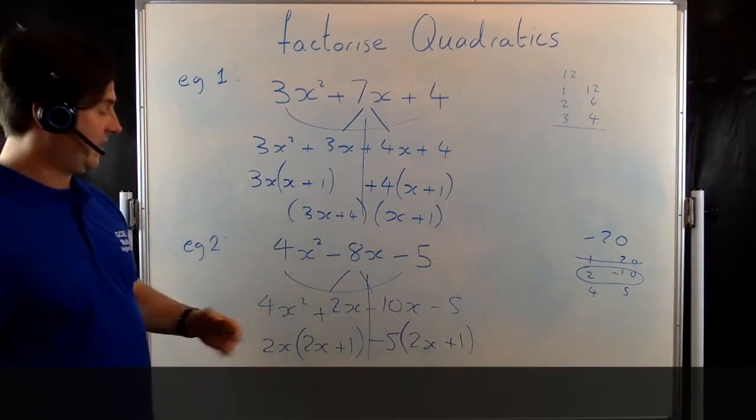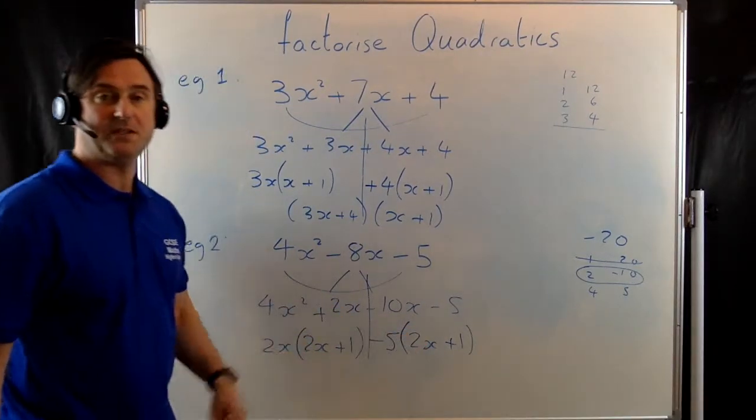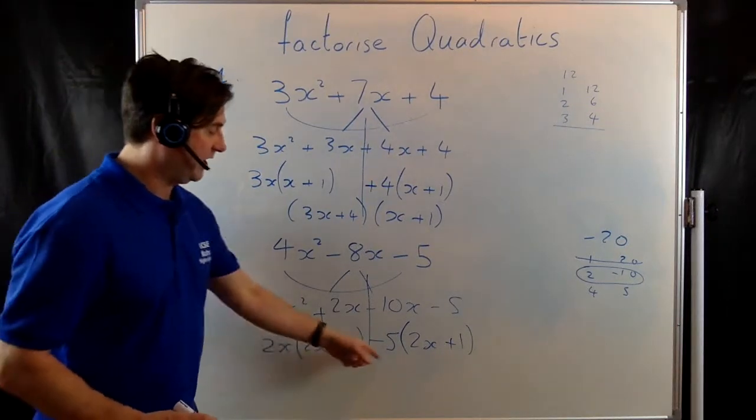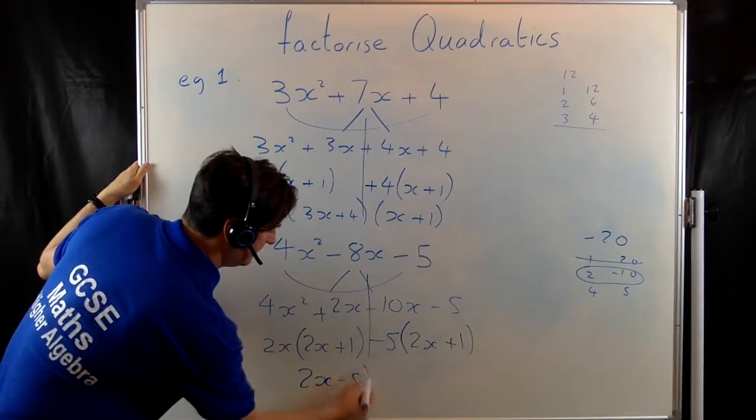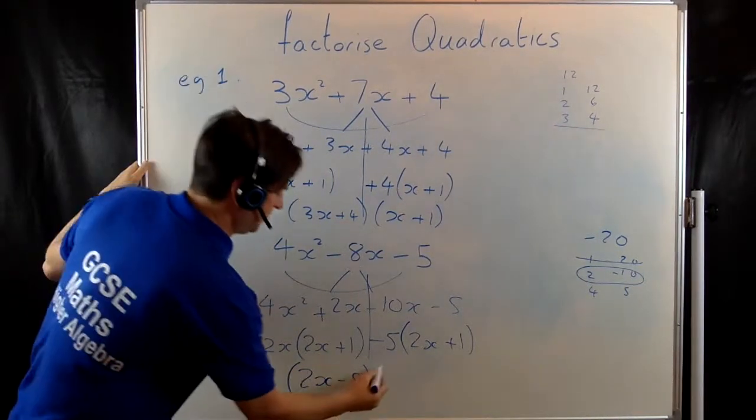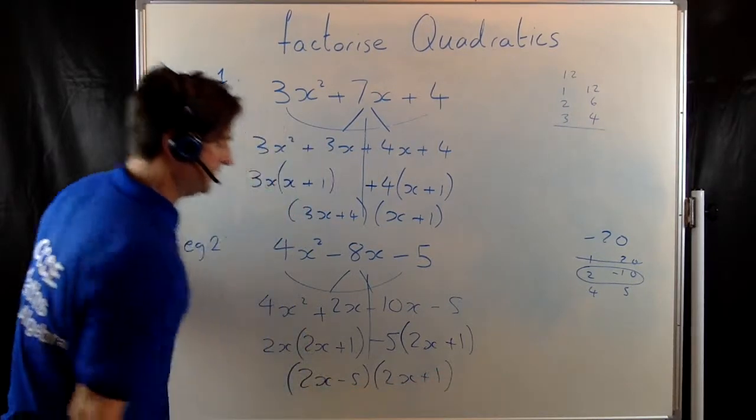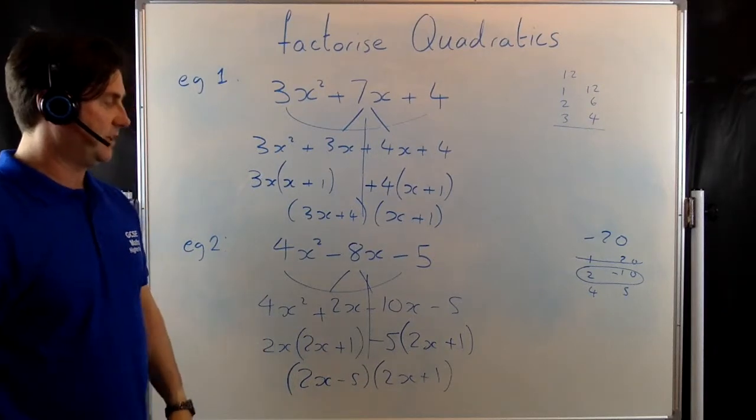You should have realised by now that the part inside these brackets should always be the same. If it's not, you know you've done something wrong. So here we now write whatever's outside the brackets in one set and whatever's inside the brackets in the other set. 2x minus 5 in one set, 2x plus 1 in the other set.